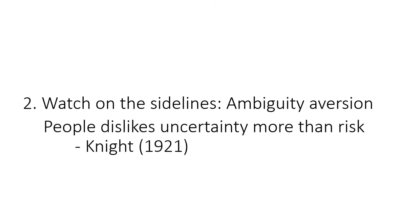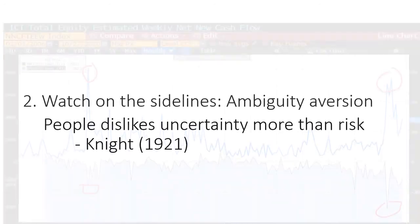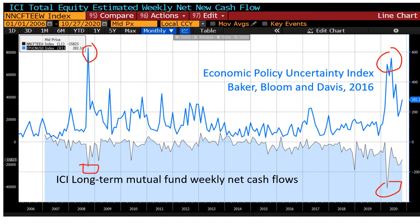Second, facing increasing uncertainty, some investors prefer to watch from the sidelines by moving their money out of the equity market temporarily and watching for bargains for their long-term investments. As Knight pointed out, people dislike uncertainty more than risk. As an illustration of uncertainty aversion, we plot an economic policy uncertainty index and the net equity fund flow on Bloomberg. We can see that they track each other closely in opposite directions, especially during periods of high economic uncertainty.